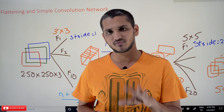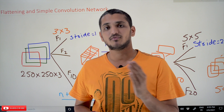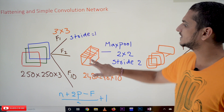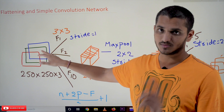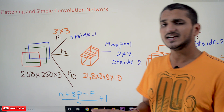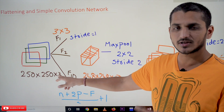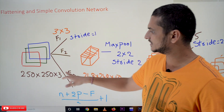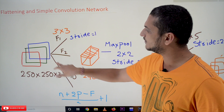Coming to today's class, let's take an example. We will understand the simple convolution neural network and what the flattening layer is. This is our simple convolution neural network. This is our actual RGB image — the input we are considering. Let's assume that the image size is 250 by 250 by 3, where 3 means three channels: red, green, and blue. 250 by 250 means the height and width of the image.